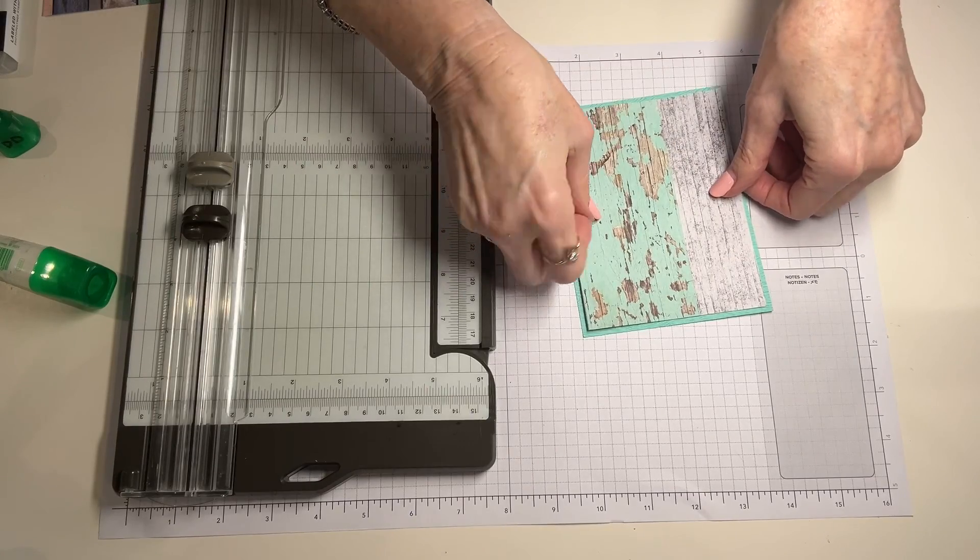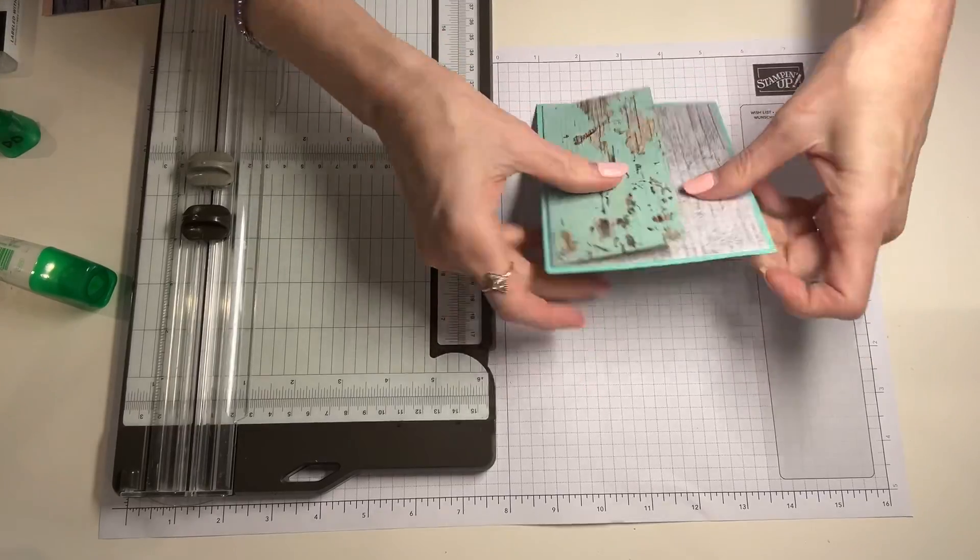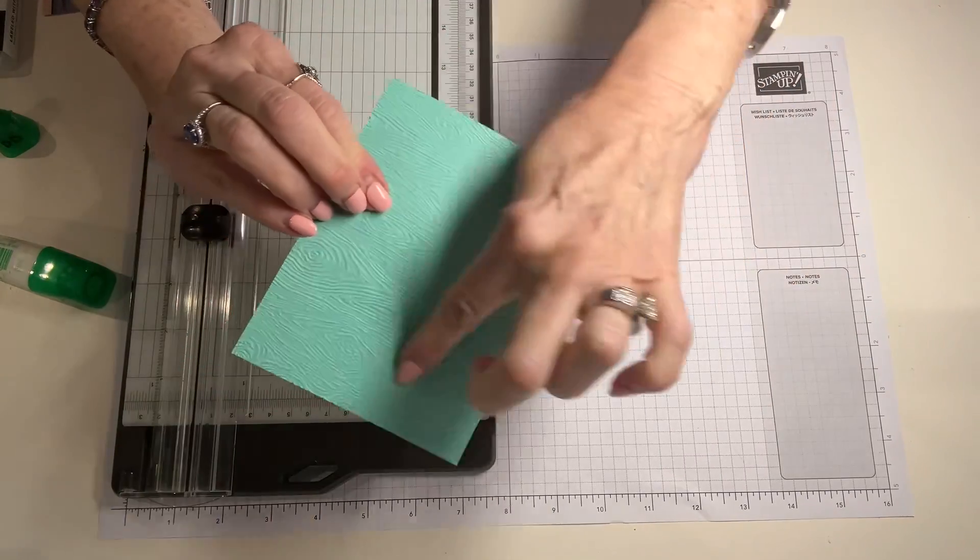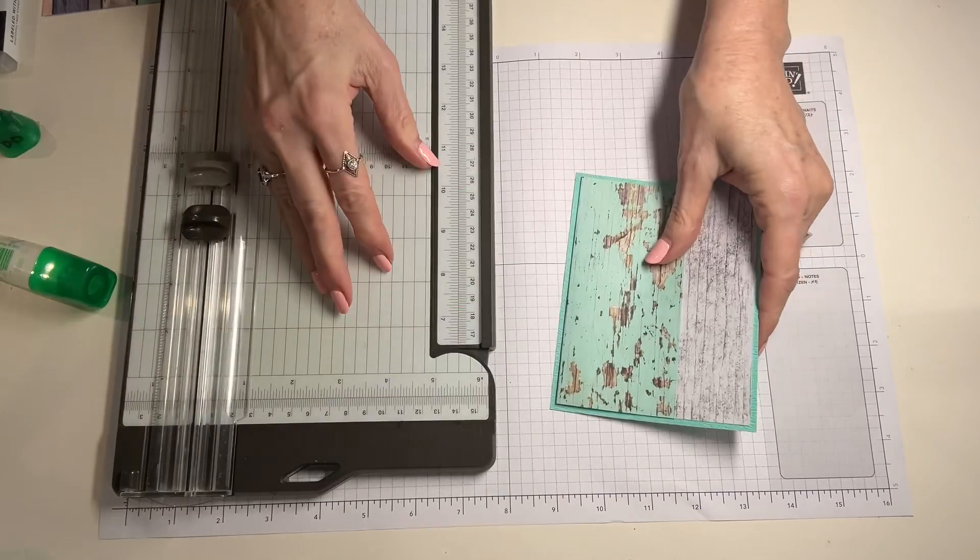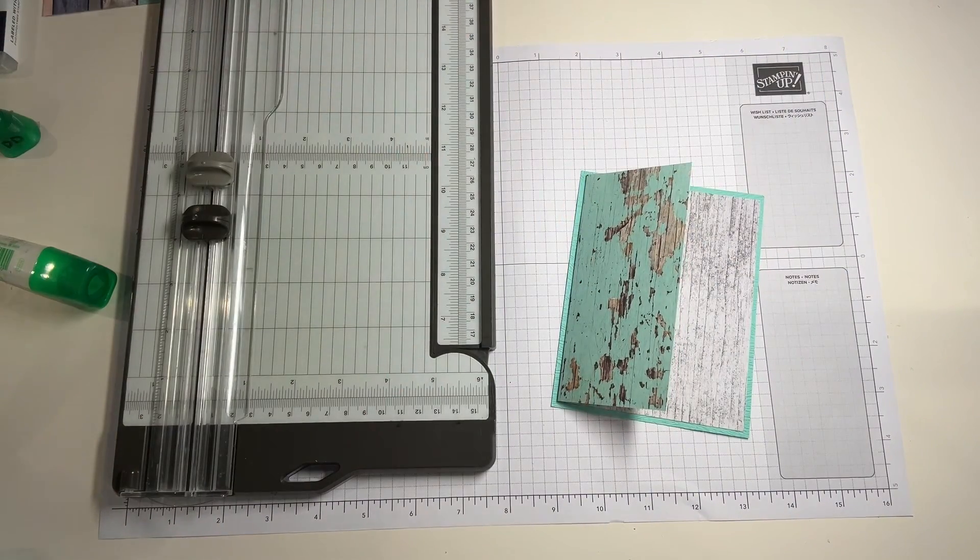You're going to use a tape runner or glue, adhere it down, leaving a little bit of a margin on your base and again the back of your card is going to look so pretty because you've embossed it. Are you having fun? Go ahead and hit the like button.